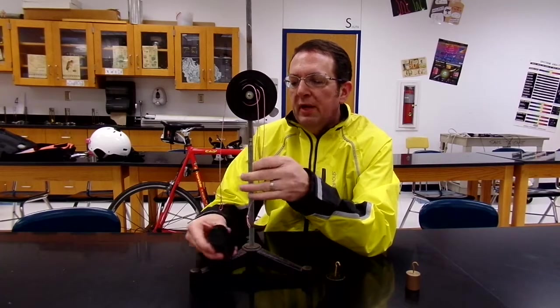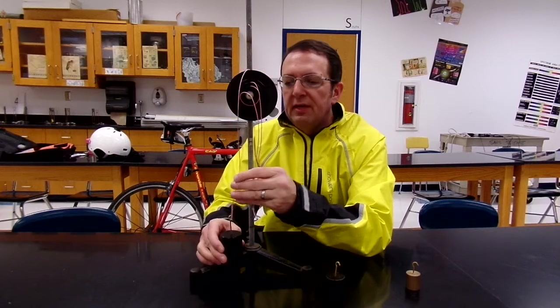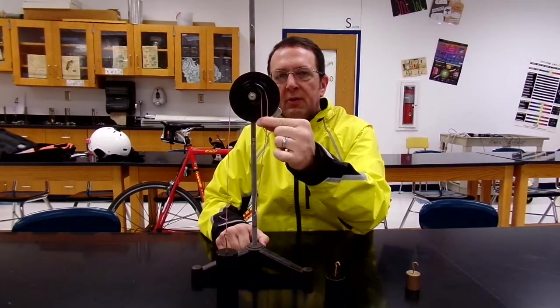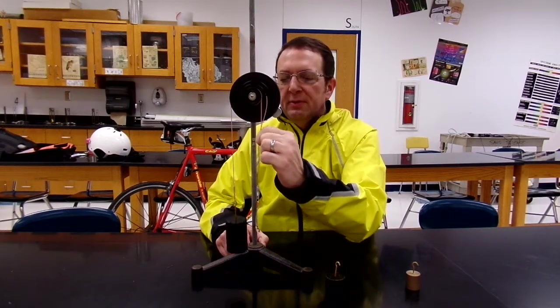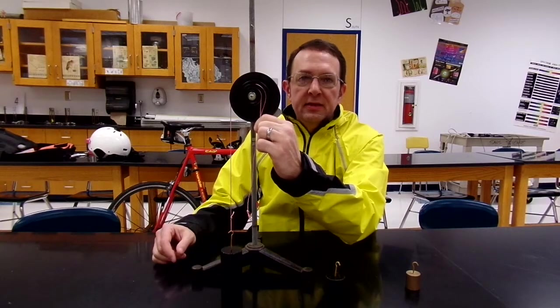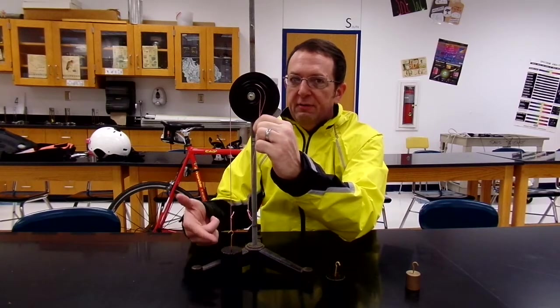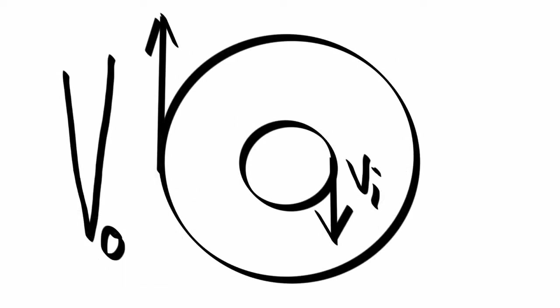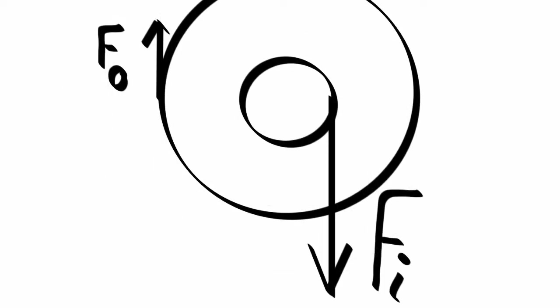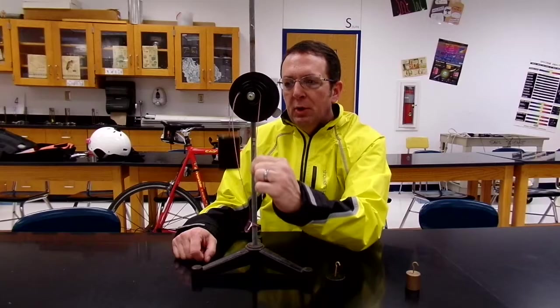So if I take that weight and put it over here where I originally applied the force, now I pull on it. It requires a whole lot of force to do that. But notice my large force — this is clearly a speed and displacement multiplier, because look how fast this thing goes. The output speed and displacement are bigger than the input speed and displacement, but it's also a force divider. Here's what it looks like — a small input velocity gives a larger output velocity, and a large input force gives you a small output force. It just flies right up!